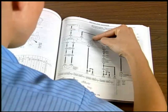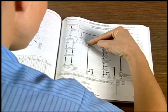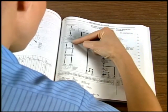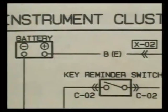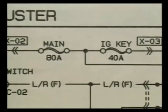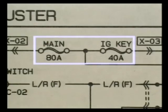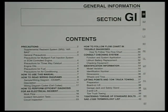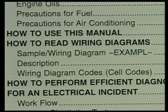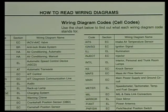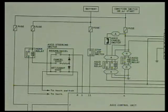Just like your trusty digital multimeter, the wiring diagram is also a diagnostic tool. Wiring diagrams illustrate how the circuits are designed and where the components are located on the vehicle. If you're not familiar with the wiring diagram, always begin with the general information section of the repair manual. This section usually explains how the wiring diagram is organized and shows you how to read a schematic step by step.